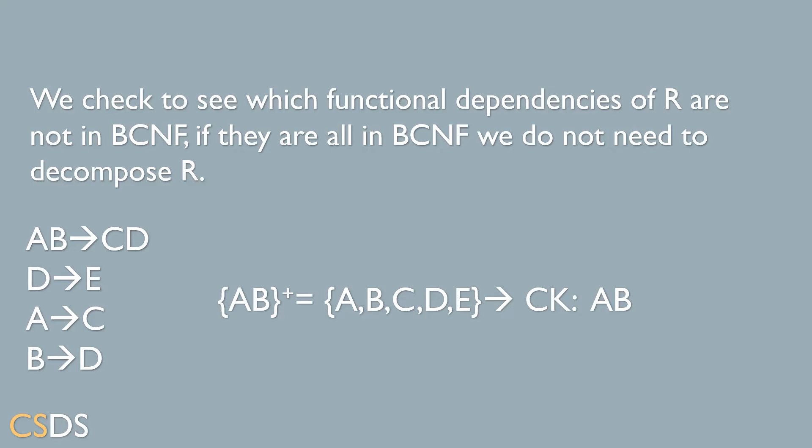To find the candidate key of the relation, we're looking to find the minimum amount of attributes whose closure gives us all the attributes of the relation R. In this case, we found that the attributes A and B give us the candidate key of the relation.